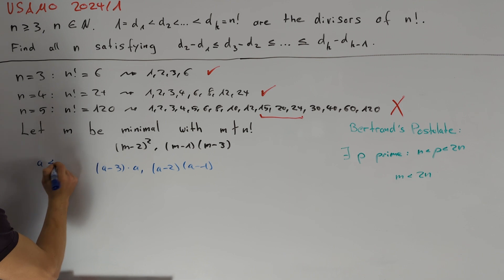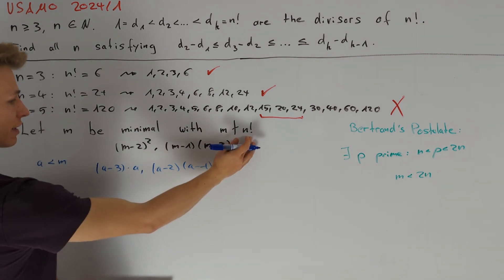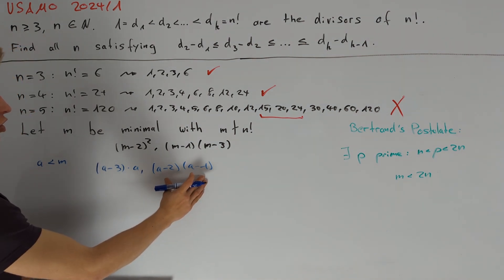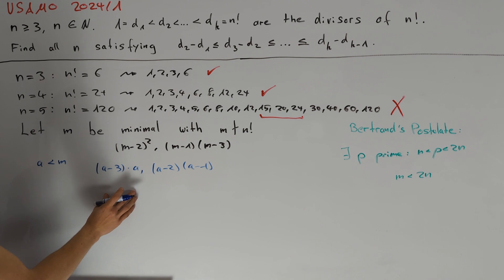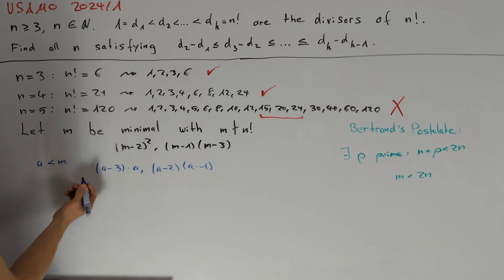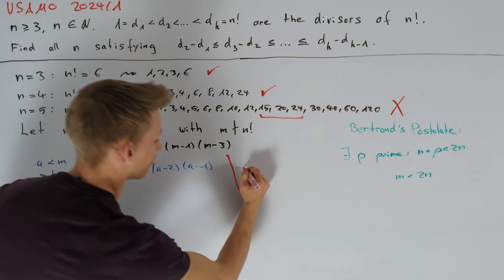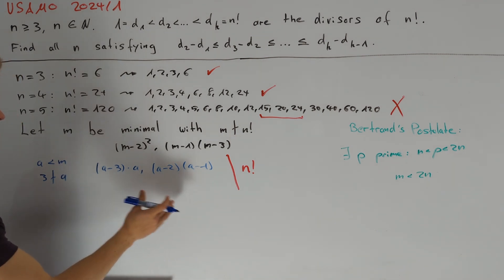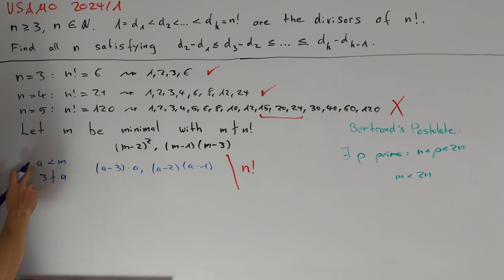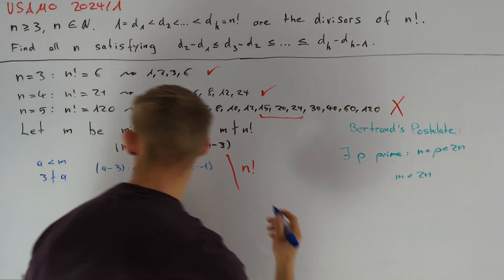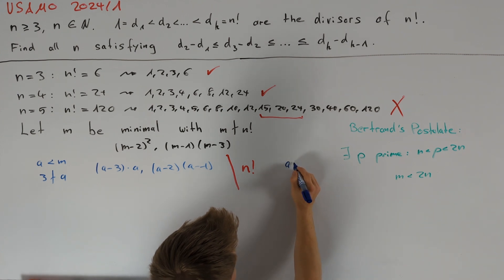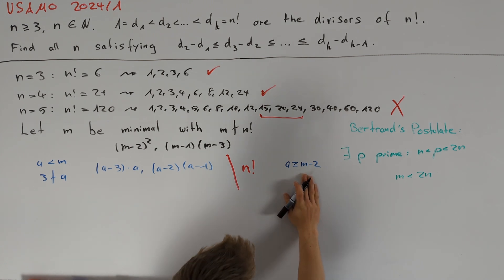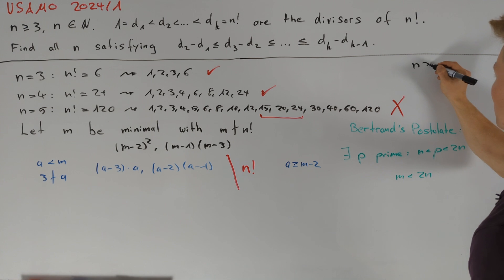If we choose a < m, then all of these factors are divisors of n factorial, so both products are also divisors of n factorial. For the first number we must ensure 3 does not divide a, so that the factors are coprime. We can choose a such that 3 does not divide a. Note that either m−1 or m−2 is not divisible by 3, so a can be chosen to be at least m−2. We only need to consider n ≥ 6 since the other cases are already handled.